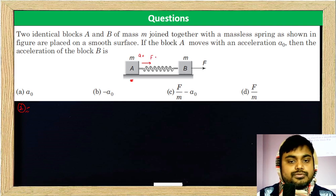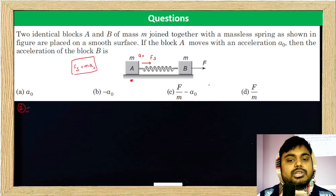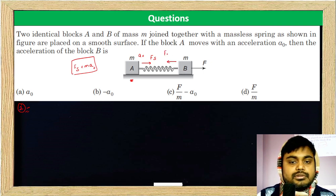So this is the spring force, force of spring. What will happen? M into A₀. So when spring is doing this, here it will be M A₀ for spring. How will it happen? M A₀.